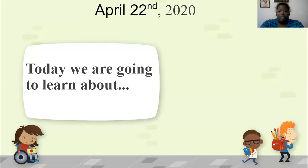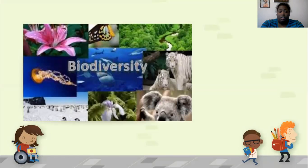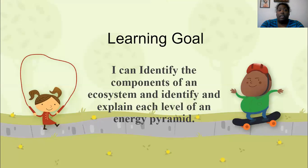So again, it is April 22nd. It's a wonderful Wednesday. We're going to continue learning about biodiversity. Our learning goal: I can identify the components of an ecosystem and identify and explain each level of an energy pyramid.